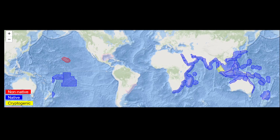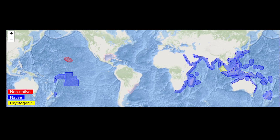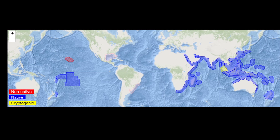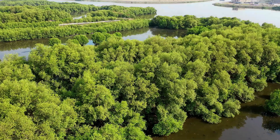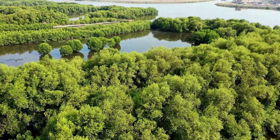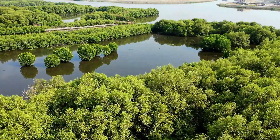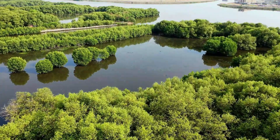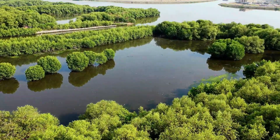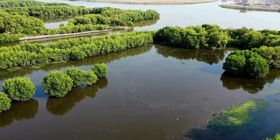Giant mud crabs are large swimming crabs. They are associated with mangrove forests in the tropical and subtropical coastal areas of the Indo-West Pacific. Mud crabs typically live in short burrows at the base of mangrove trees among the roots. Mud crabs are highly adaptable to various environments due to their ability to tolerate a broad range of temperatures and salinities.